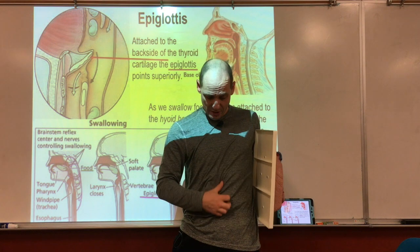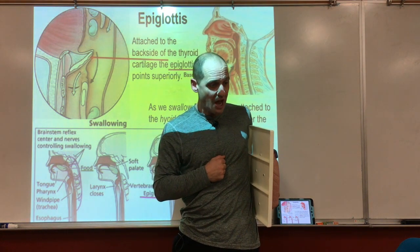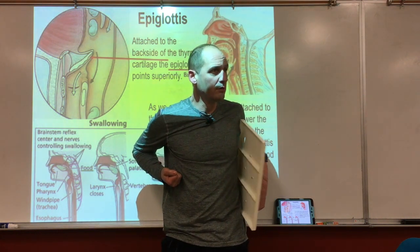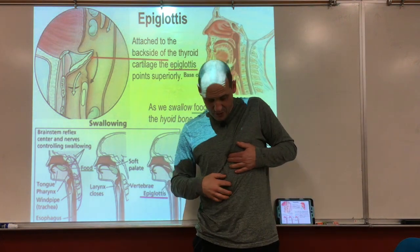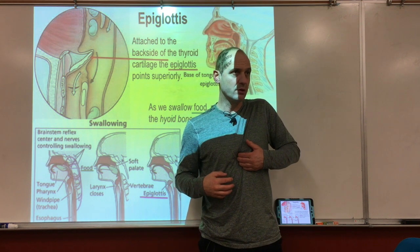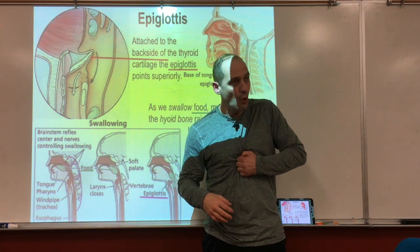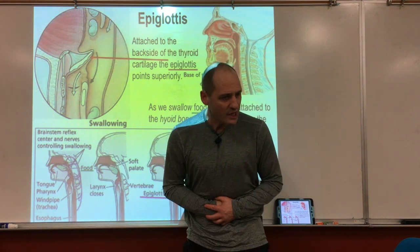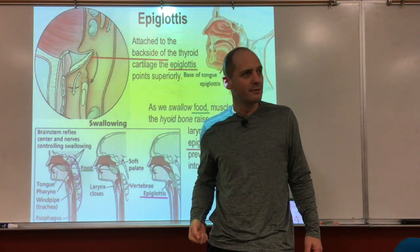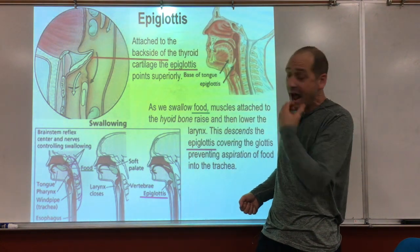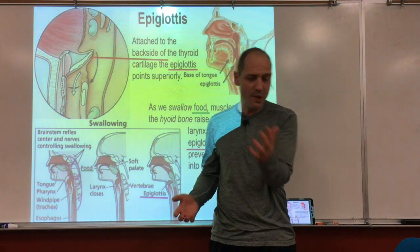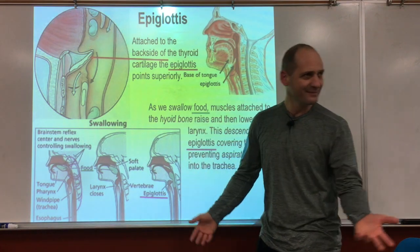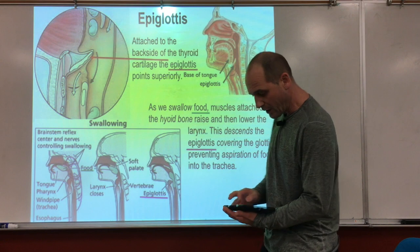For the Heimlich maneuver: put a fist on the xiphoid process, then place the other fist below it near the belly button, get behind the person and scoop in and up. You don't want to break the xiphoid because it could pierce the liver. For a baby, you face the baby down and push from the back upward. The epiglottis function: so we don't choke and food doesn't go down the windpipe.